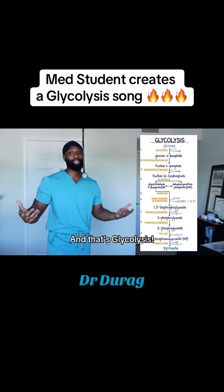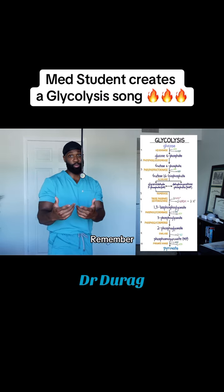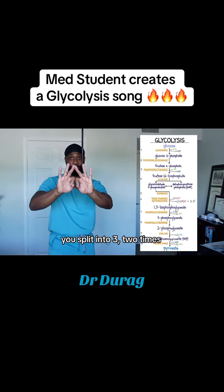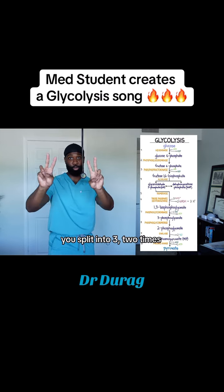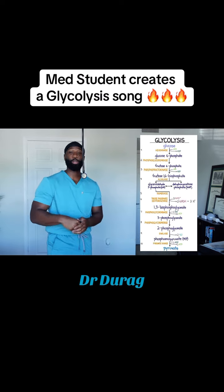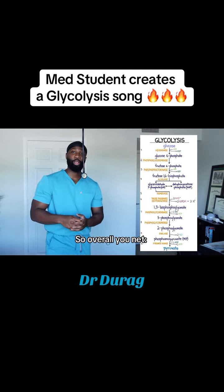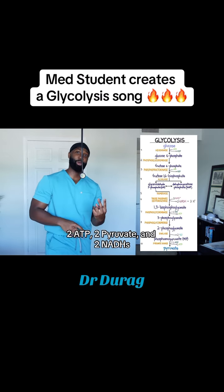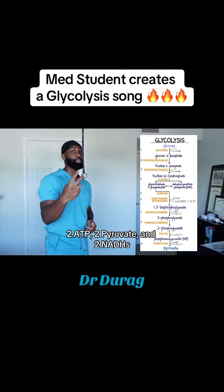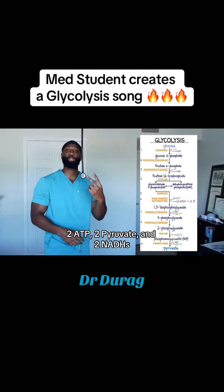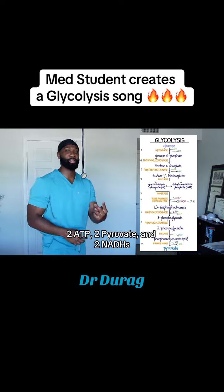And that's glycolysis. Remember, you start with six carbons, you split into three — two times. You use two ATP, so net you get two ATPs, two pyruvate, and two NADHs.